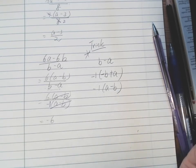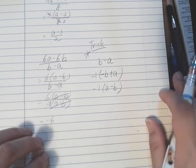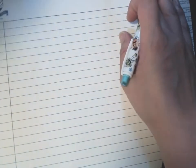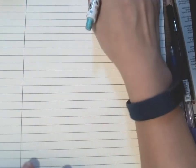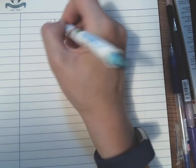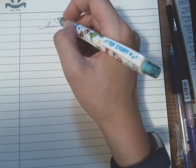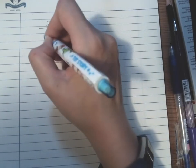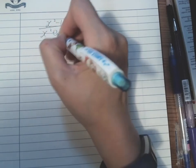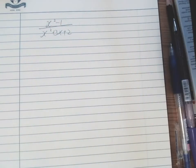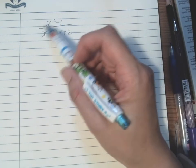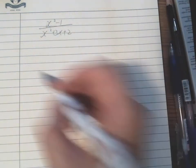All right, so more on factorization. I'm sure you are familiar with the identities. What we have here is x squared minus one over x squared plus 3x plus 2. For this case, we will have to simplify it. Again, you cannot just take away this x squared. We need to do it both ways.